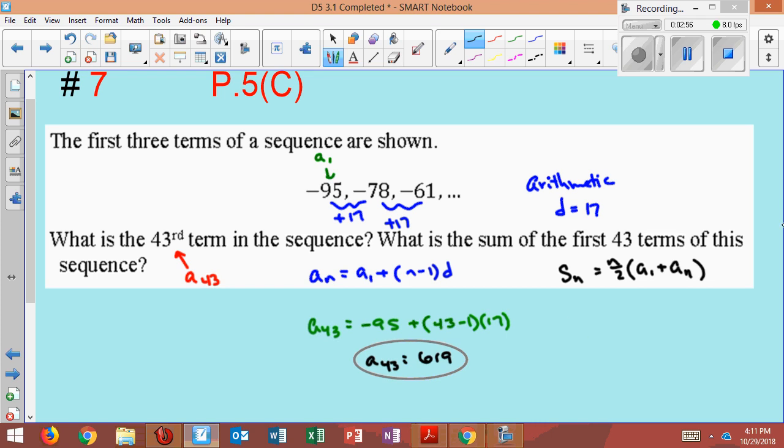So in this case, since I want to find the 43rd term, I'd say S sub 43 will equal 43 divided by 2 times A sub 1 was negative 95 plus 619, which that's A sub n in this case. So if I type this in the calculator,